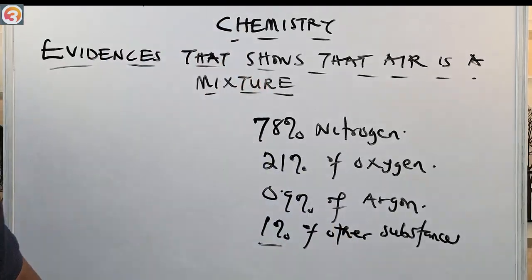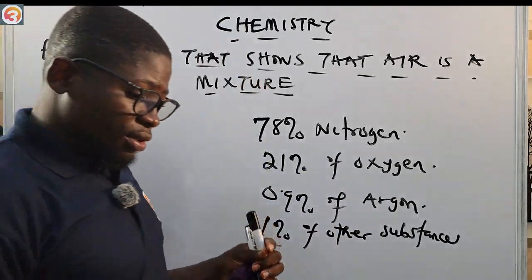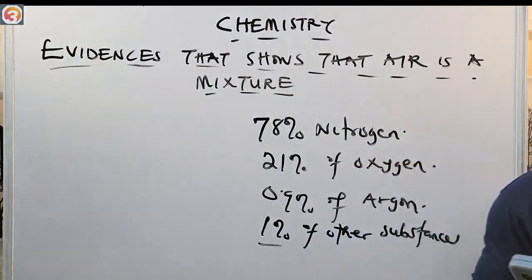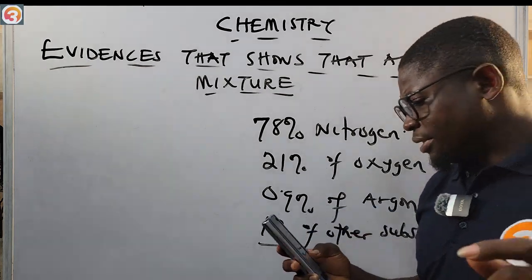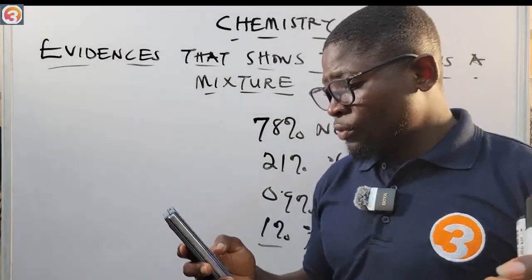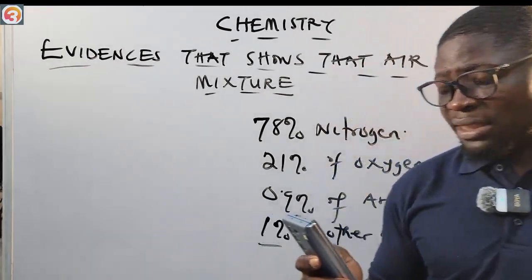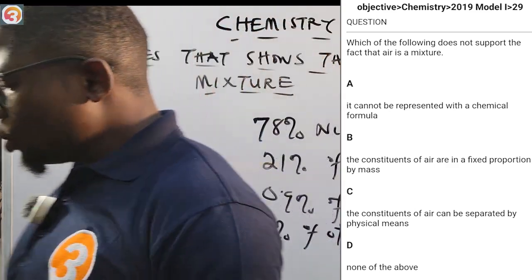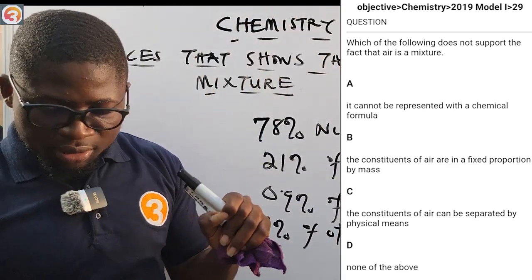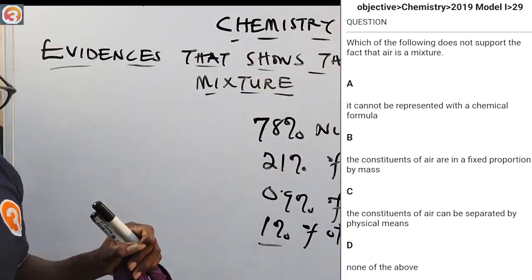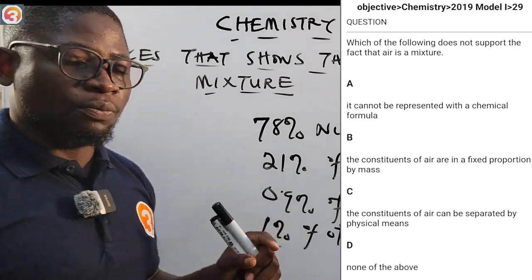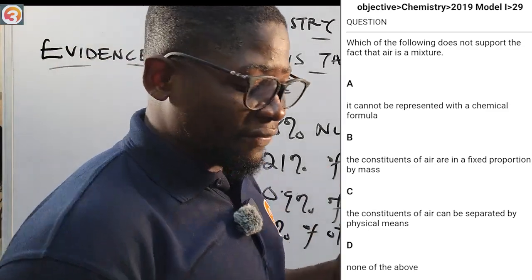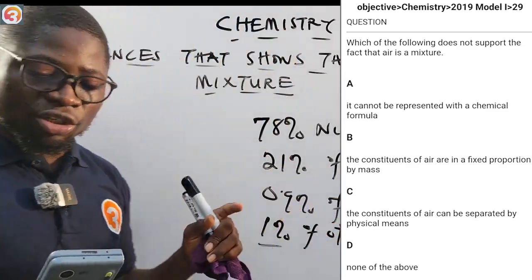Now let's see a question from the O3School Jam app about this. This is a 2019 question, number 29. It says: which of the following does not support the fact that air is a mixture?